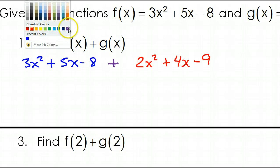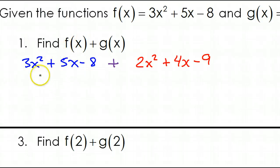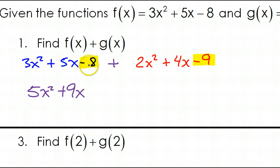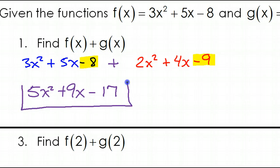Now we can go ahead and combine like terms. The 3x squared and the 2x squared are like terms — together they make 5x squared. Next, the 5x and the 4x together make 9x. Finally, negative 8 and negative 9 together make negative 17. So that is the final answer for number 1.